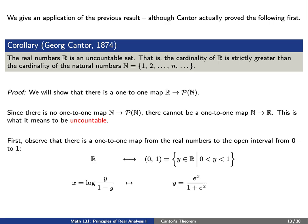We're going to construct our map very carefully, going from the real numbers to the power set of the natural numbers. First, let's observe that there is a one-to-one map from the real numbers to the open interval from 0 to 1. The way we'll do this is: we'll take a real number x and consider y = e^x / (1 + e^x). Conversely, given a number y between 0 and 1, we can consider log(y / (1 − y)), which gives us a real number x. So we do indeed have a one-to-one map here.